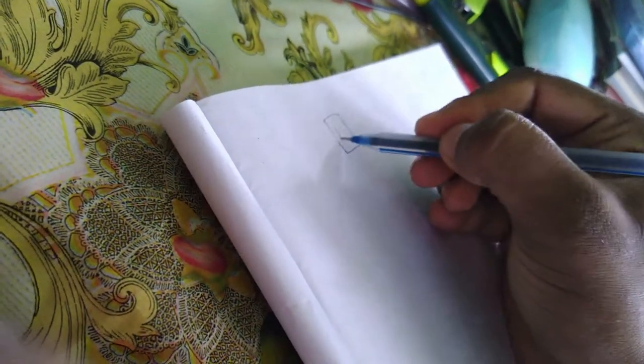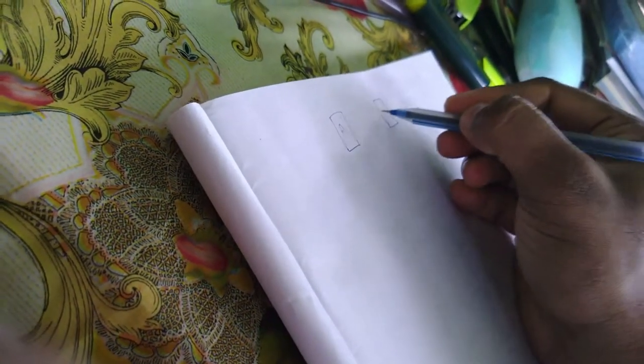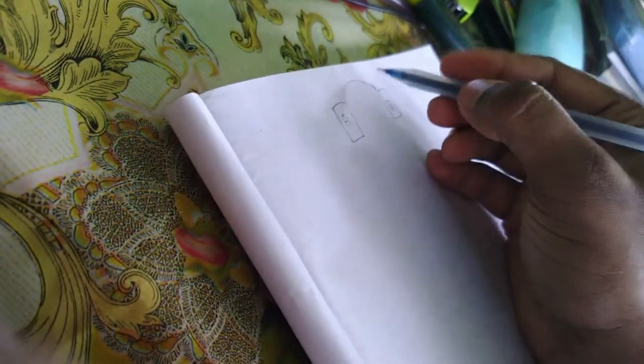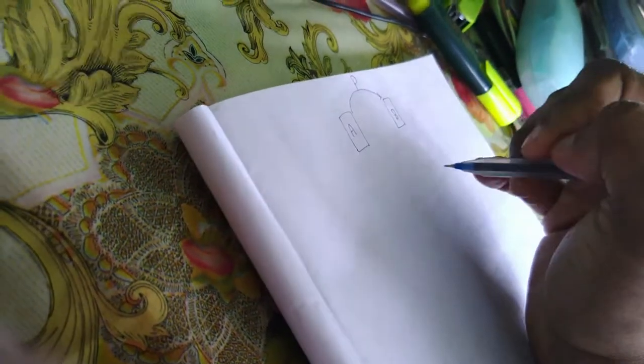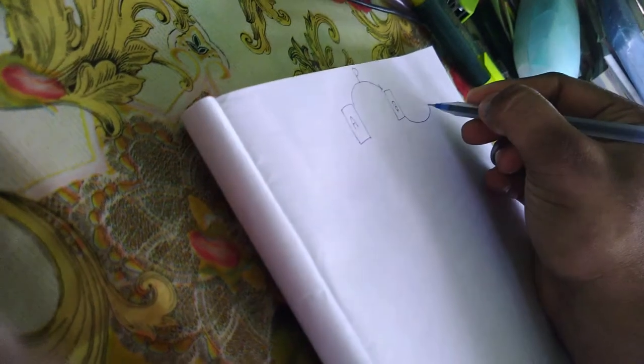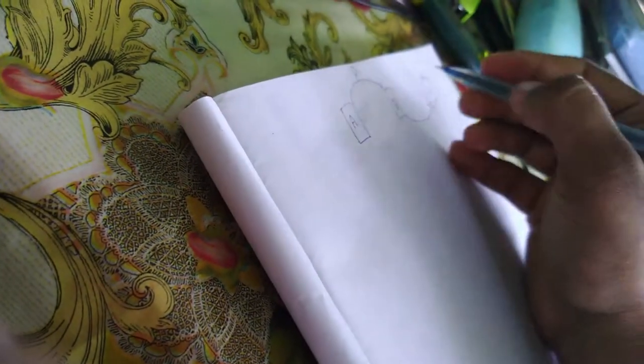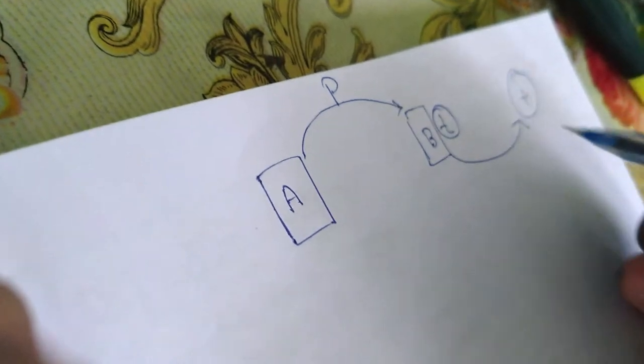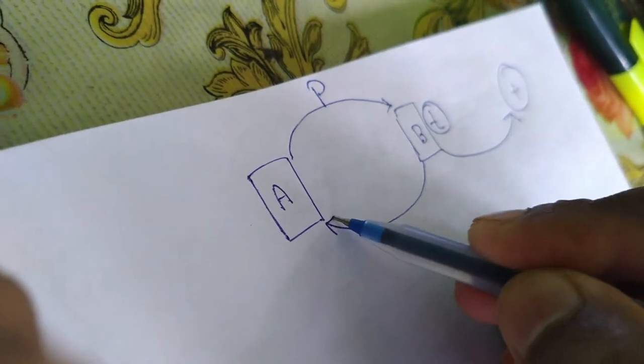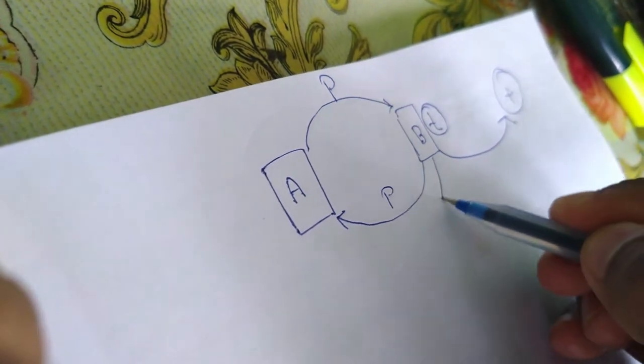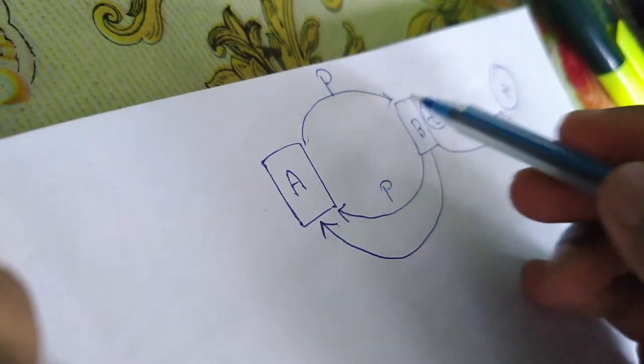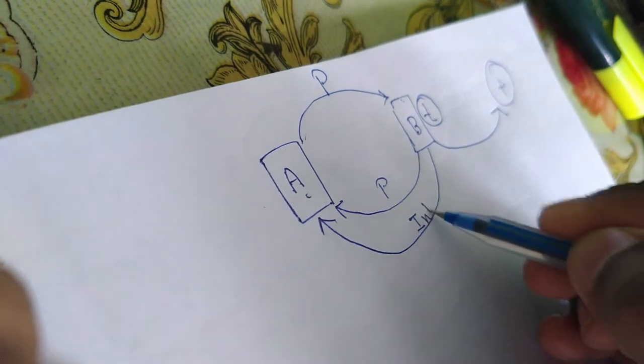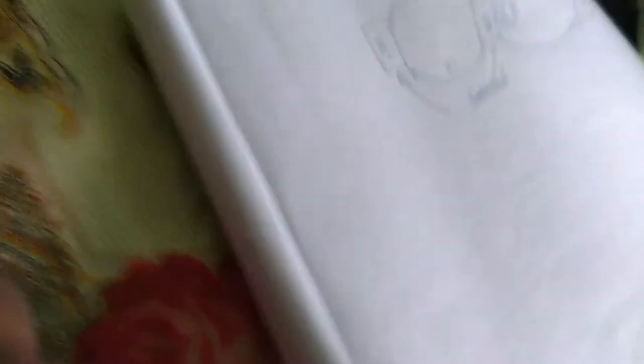Let us assume that there are two agencies or two people, A and B. Now A has given B some money, let that be P, the principal. B uses that money for some other work and has kept it for T years. When B returns that money to A, B has to pay some more money as a service charge, and that money is known as interest.